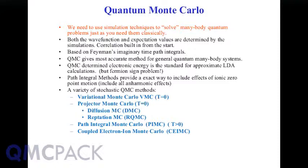If you're coming from the DFT world, you kind of think that DFT can explain everything about quantum mechanics, and in principle it can. But in practice, DFT is a mean field theory, and it assumes that electrons don't interact with each other except through a mean field. Whereas quantum Monte Carlo is the opposite extreme, where we assume that electrons are particles that interact, and it has more of a classical feel.